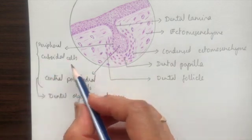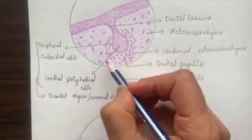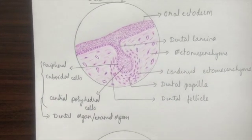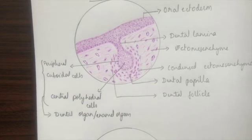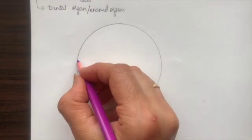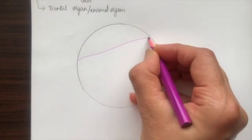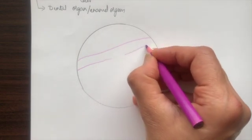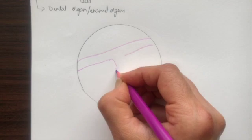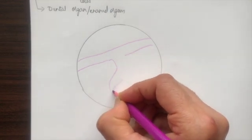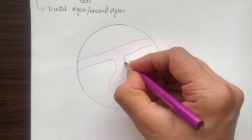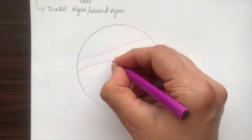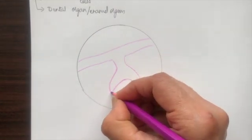Together the dental papilla, the enamel organ, and the follicle form the tooth germ. This completes the drawing of the bud stage. Next we shall start with the cap stage: the same tooth bud proliferates in different regions to give the cap shape morphologically, and we draw a cap like this.